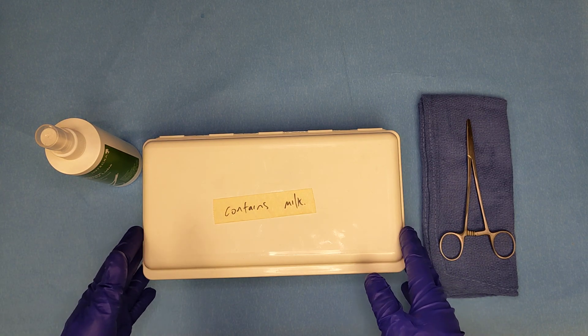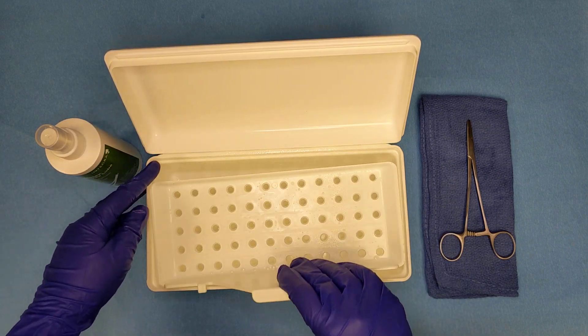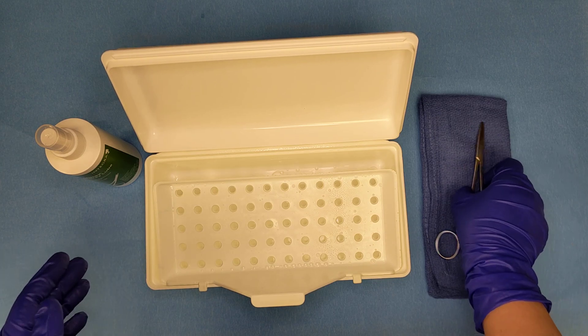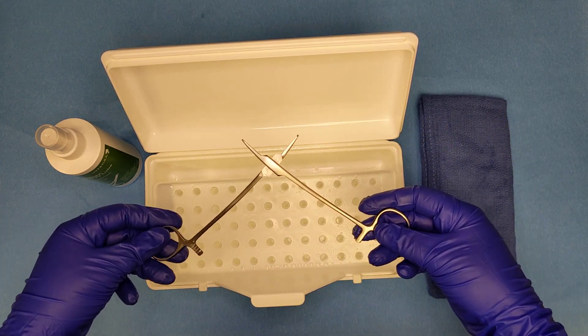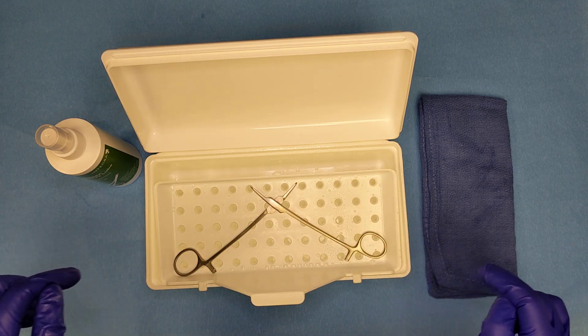The first step to lubricating an instrument is setting up our lubrication container. We're going to open up the box and there's a little tray in here that sits on the edge, so we're going to hook it on the edge there. Then we're going to open up our instrument and set it inside of the tray, exposing the parts that we want to lubricate.